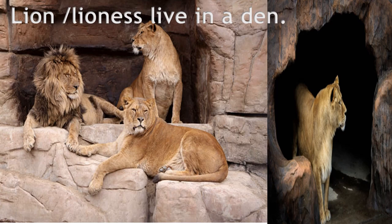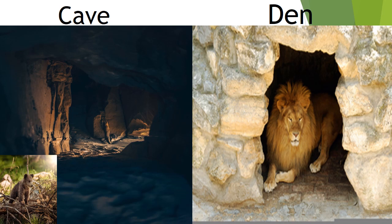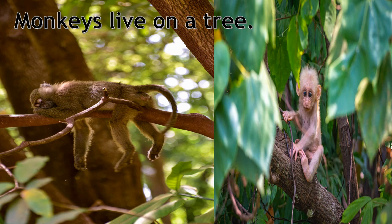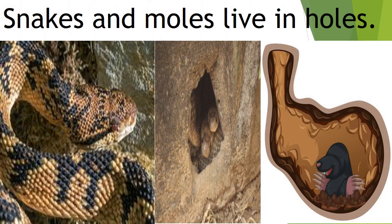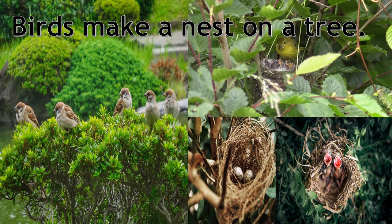Lion and lioness live in a den. As you can see in the picture, a cave is a large hole formed underground or in the face of a hillside, and a den is a small hole in the side of a hill. Monkeys live on a tree. Snakes and moles live in holes. Birds make a nest on a tree.